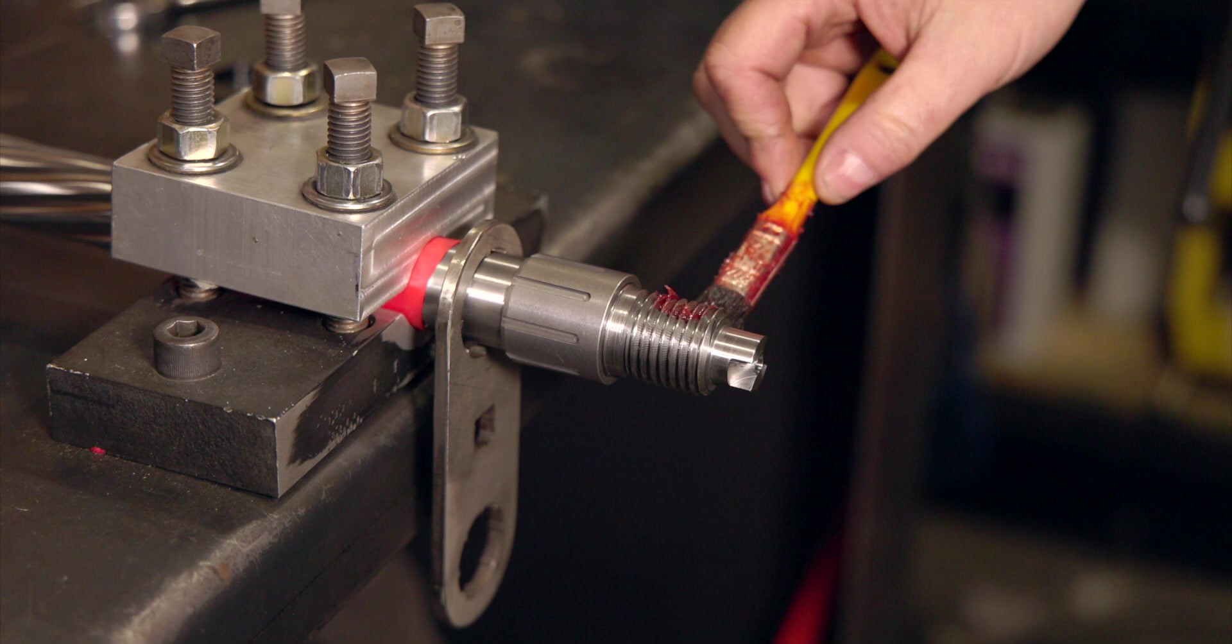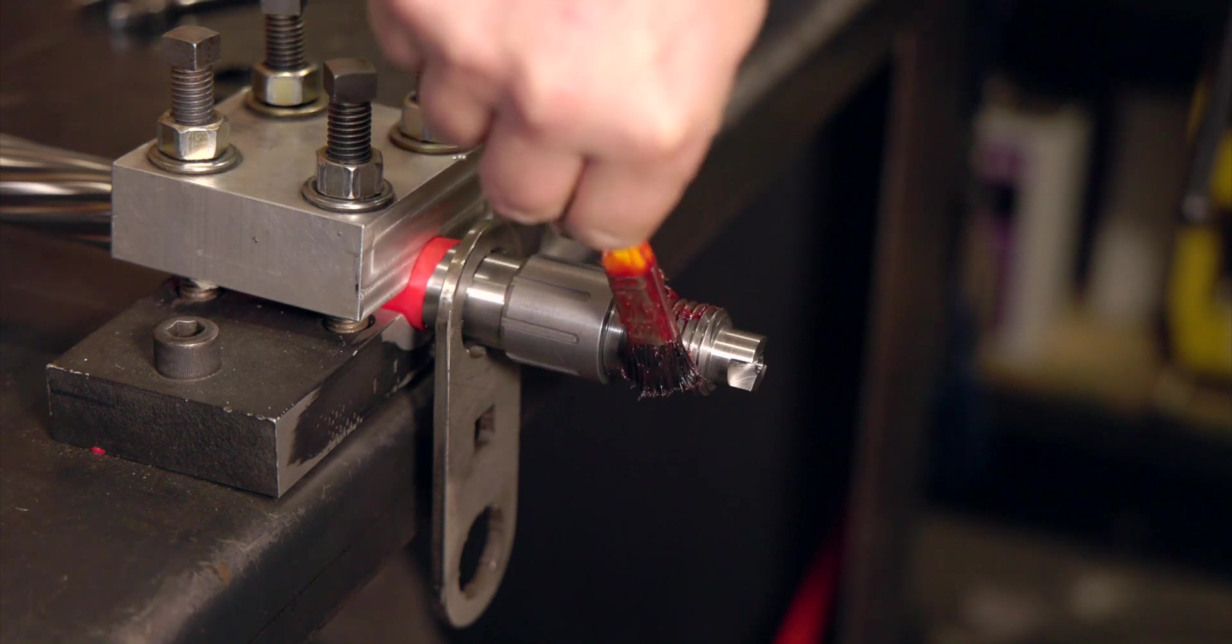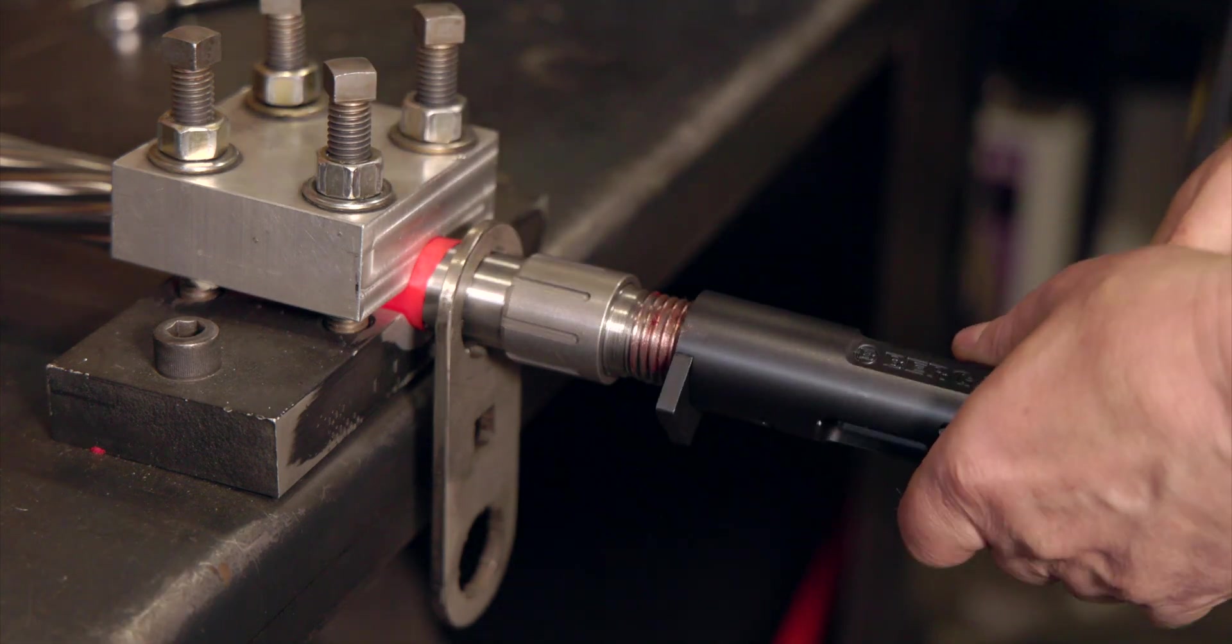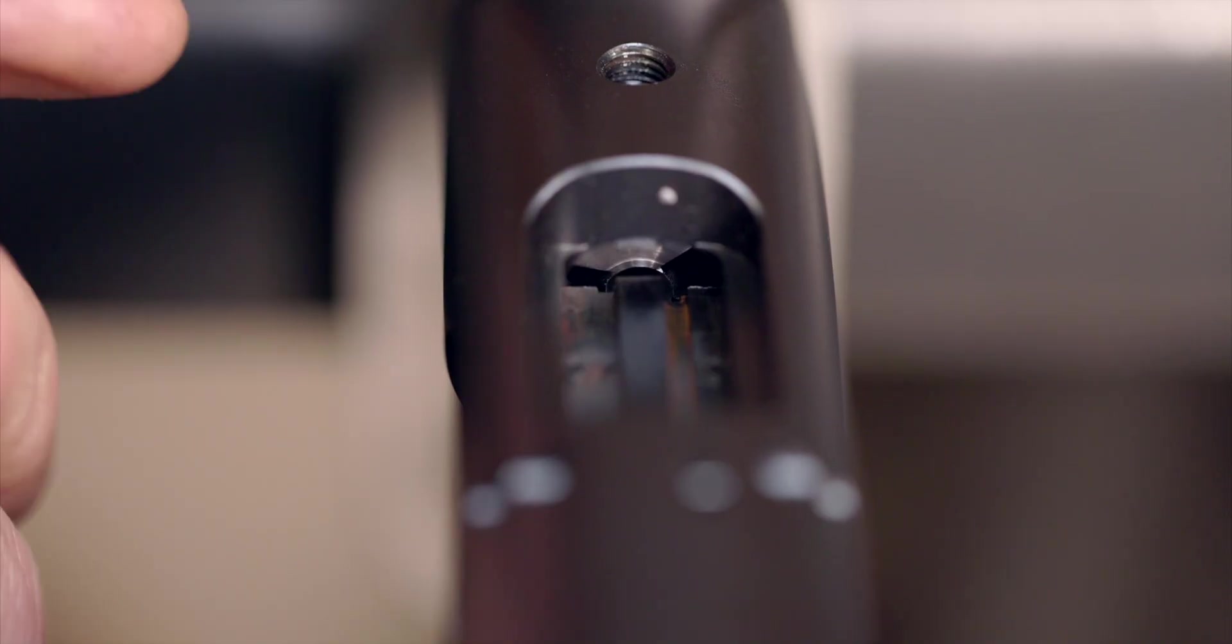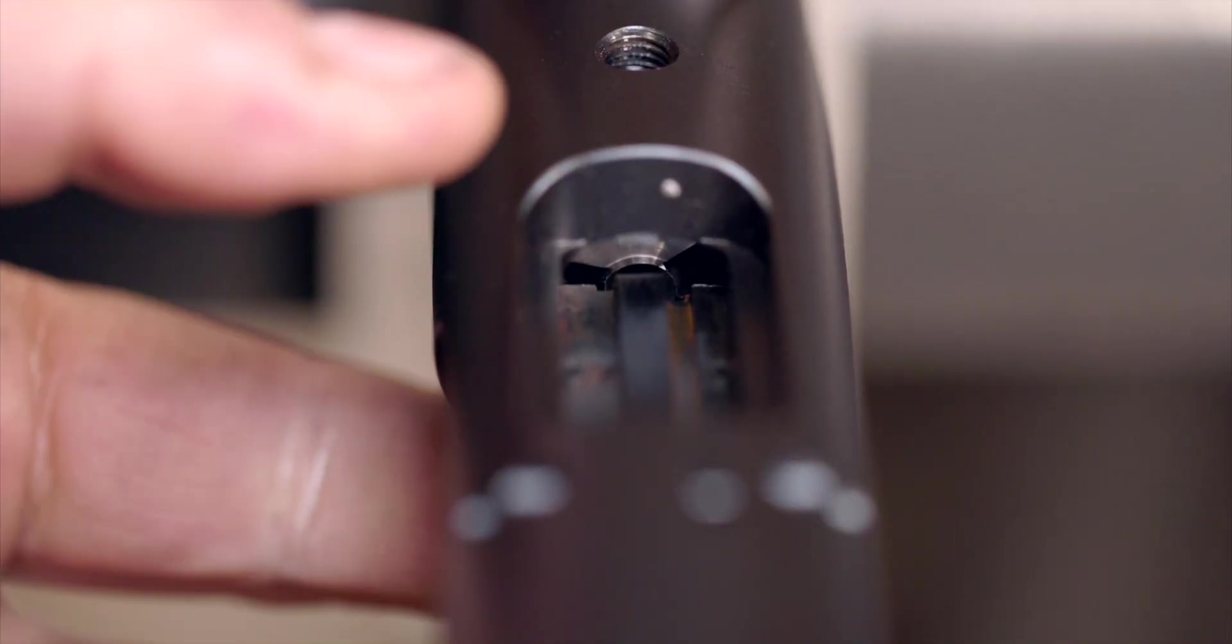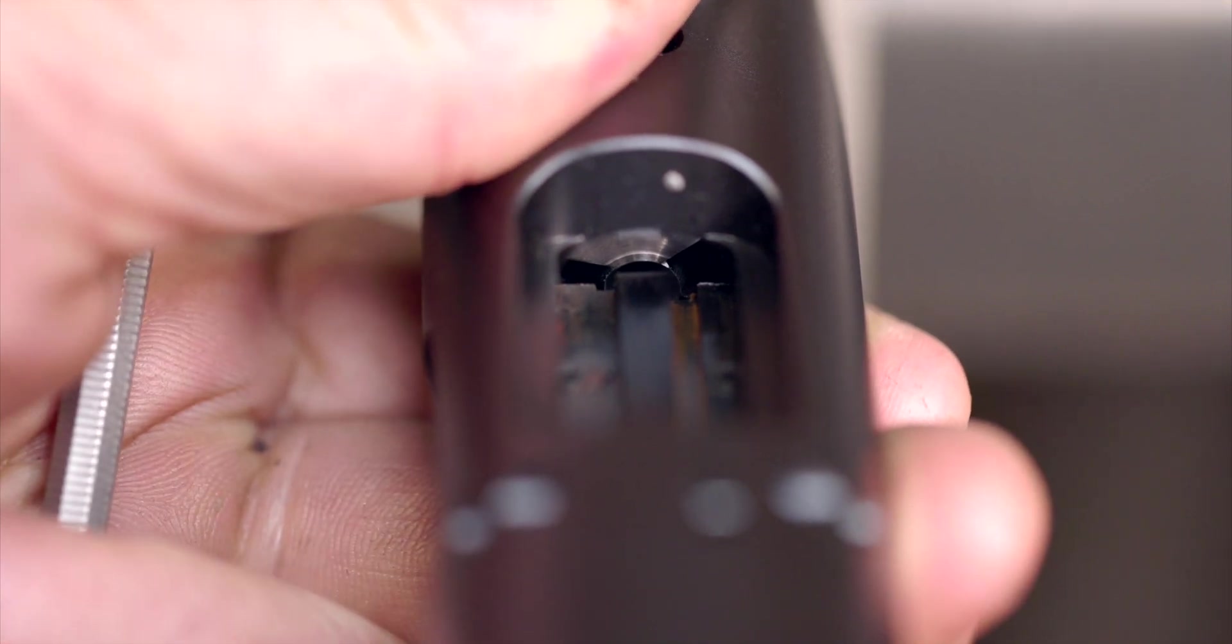We'll put a little bit of anti-seize or grease on the threads and screw the action on until it stops. Once it stops we're going to look at it from underneath.